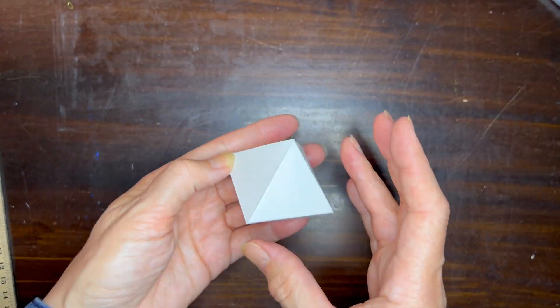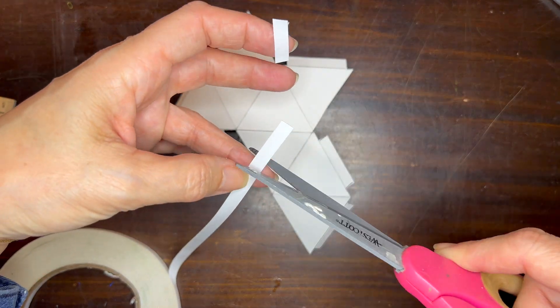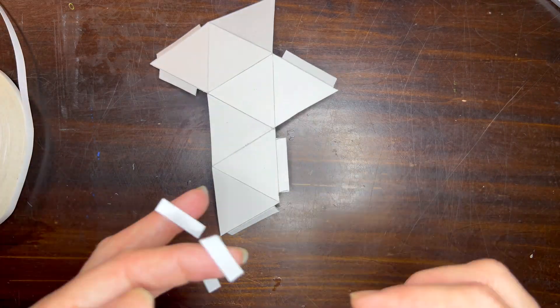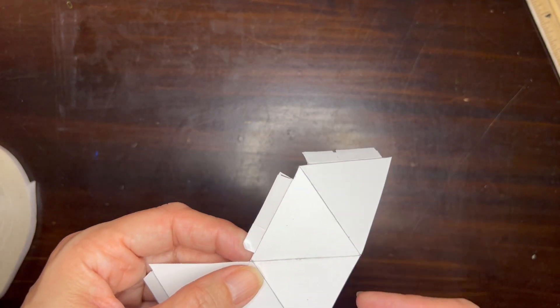Next we're going to add some double stick tape to each of those tabs. I'm using some double stick fabric tape. They come in very narrow strips and this works perfectly for a project like this. It's also extremely tacky and so it's going to stick really easily.